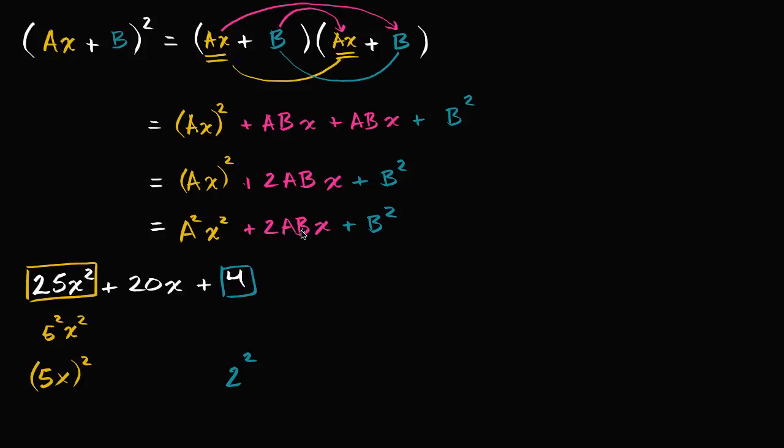And so let's see, what would be two times AB? Well, five times two, AB would be 10, and then two times that would be 20. So this right over here is plus two times five times two times 2x.